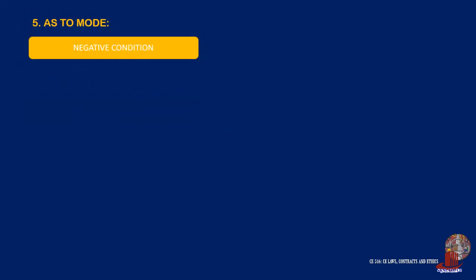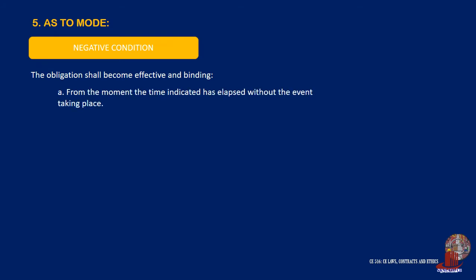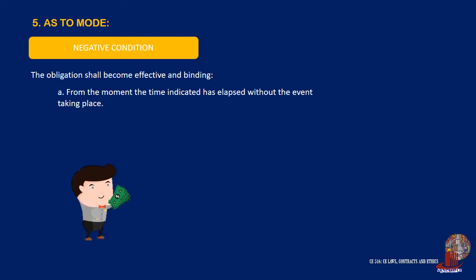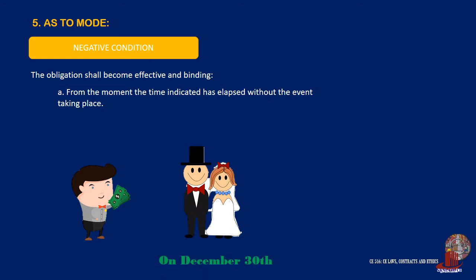The obligation with a negative condition shall become effective and binding in two cases as well. First, from the moment the time indicated has elapsed without the event taking place. Having the same example, Rob binds himself to give Bert a sum of money if Bert is not yet married to Charisse on December 30th.